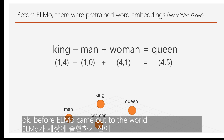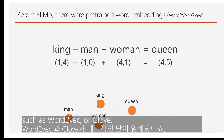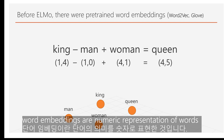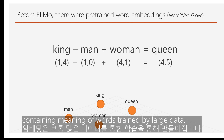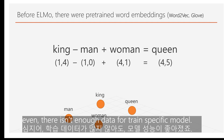Before ELMo came out, NLP was very happy with pre-trained word embeddings such as Word2Vec or GloVe. These word embeddings are numeric representations of words where the numbers carry the semantic meaning of the words, trained on tremendous data.